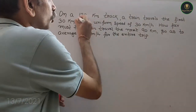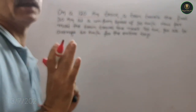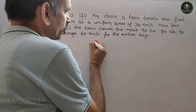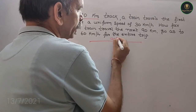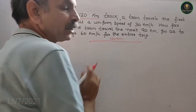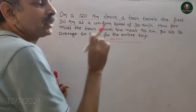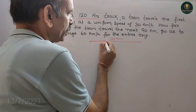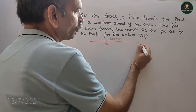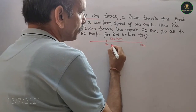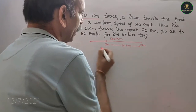Total distance is 120 km — that means this is your track, this is 120 km. Now, the first 30 km is at a uniform speed of 30 km per hour, that means from here to here. This is your 30 and this is your 120. Remaining distance is 90 km, and this is your 30.